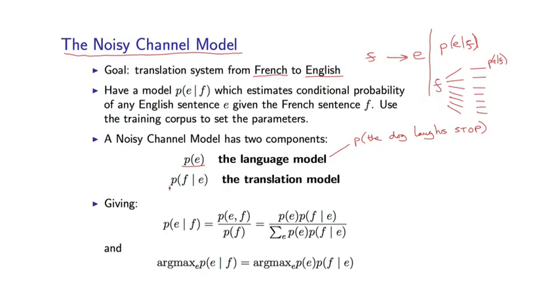The second part of the model is what's called the translation model. This is a model of P(F|E). Notice that this is reversed from the direction here, and this is what we often see with the noisy channel model. So P(F|E) for any English sentence, for example, the dog laughs. If we consider all possible French sentences, an infinite set, we're going to have a model P(F|E) for each French sentence conditioned on the English sentence.